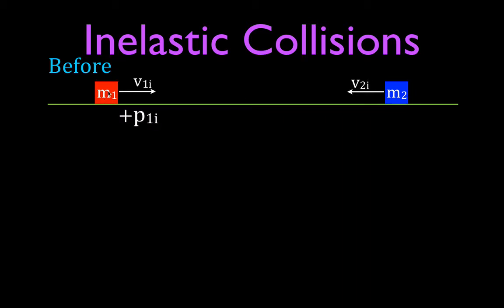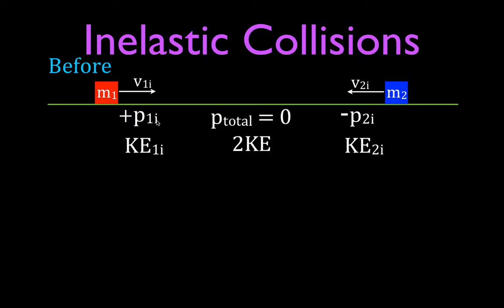Object M1, when we multiply the mass and velocity, gives a positive initial momentum. Object M2 gives a negative initial momentum. Momentum is a vector, so the magnitudes are equal but directions are opposite — when we add them, the total momentum of the system equals zero. But they are moving and have kinetic energy, which is a scalar, so we add both kinetic energies and get 2KE. The system has no net momentum but does have kinetic energy.